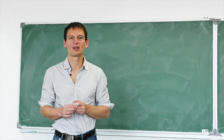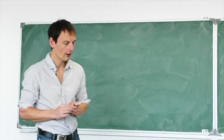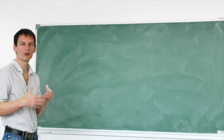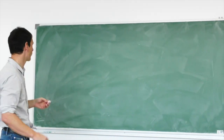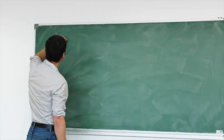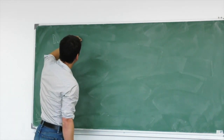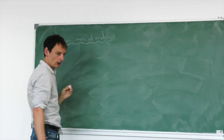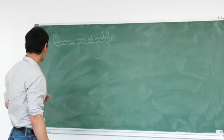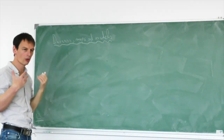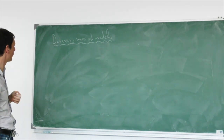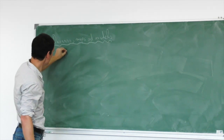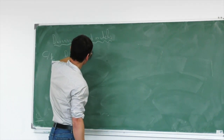Welcome back to the course on arithmetic and geometry of curves. In this part of the course we are going to see how we can use divisors to provide nice models of curves — so maps and models. I take a curve C which is smooth, projective, absolutely irreducible over a perfect field K, and I take D a divisor over K.